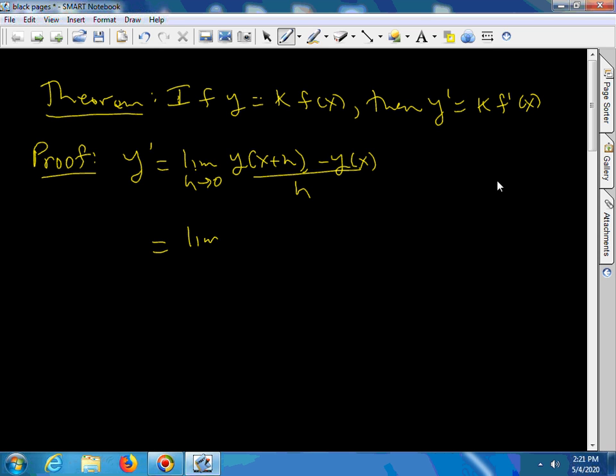And this is equal to the limit as h goes to 0 of this function, which is y evaluated at x plus h. So it's k times f of x plus h minus k times f of x, all over h. And I can factor out a k from the numerator.